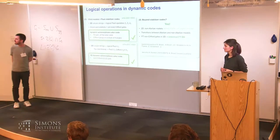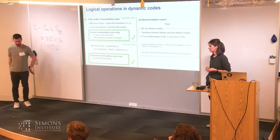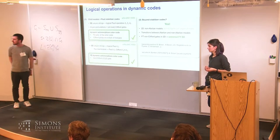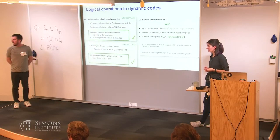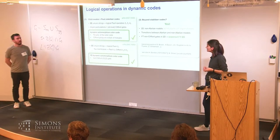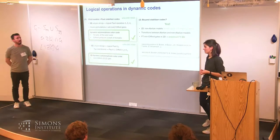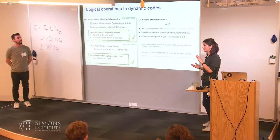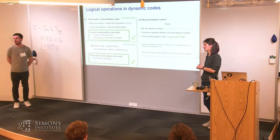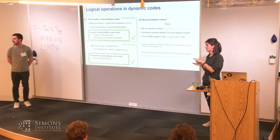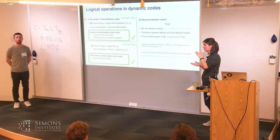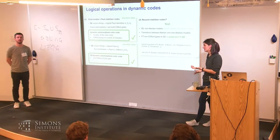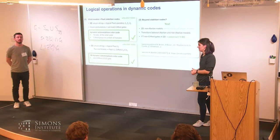Q: Is it challenging to extend to encoding n qubits? A: It's the same as for respective stabilizer codes — you can stack them. That's what we've been doing with triangle color codes: stacking them on top of each other gives n qubits on the computer. But that's nothing fundamentally new.